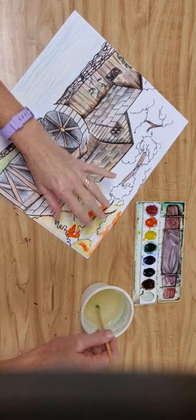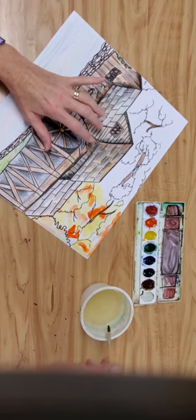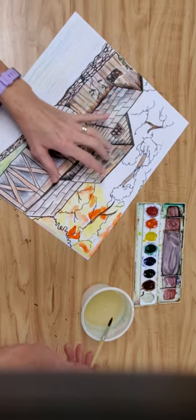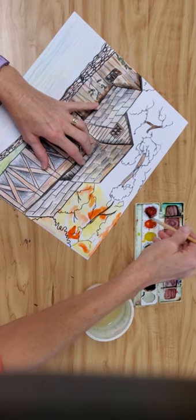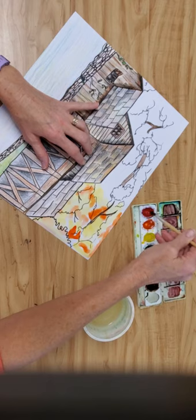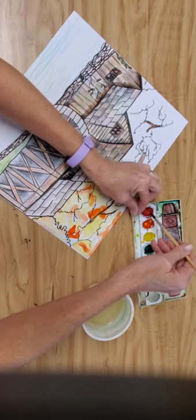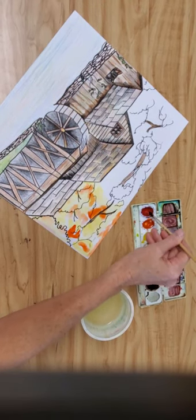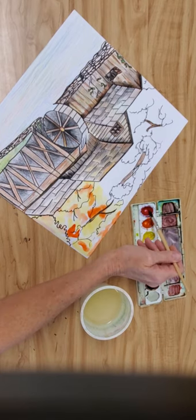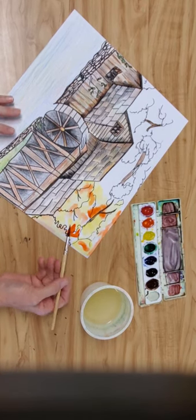You might even let this dry and work on another area and come back and add the red. I'm going to go ahead and put a dab of red in. Just tickle real gently. Tickle, tickle. Don't push down. Just get it on the tip of the bristles.